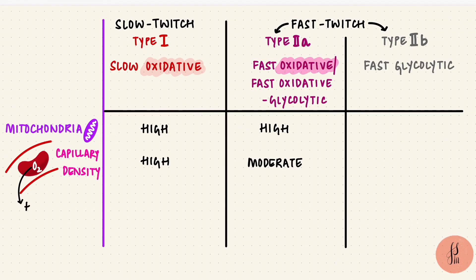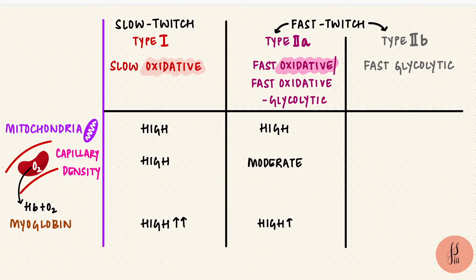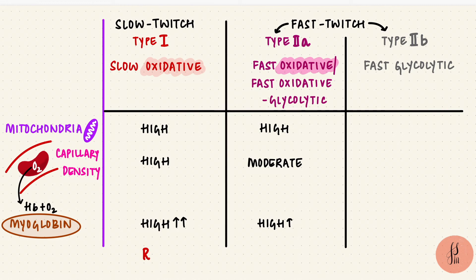Just like we have hemoglobin carrying oxygen in blood, muscles have myoglobin. It can bind to oxygen and store it for use. Slow fibers have a lot of myoglobin; the fast oxidative fibers do as well, just not as much. This myoglobin gives color to the muscle fibers, making the type 1 fibers red. The type 2a fibers are red as well, just not as much — so we'll put down light red.